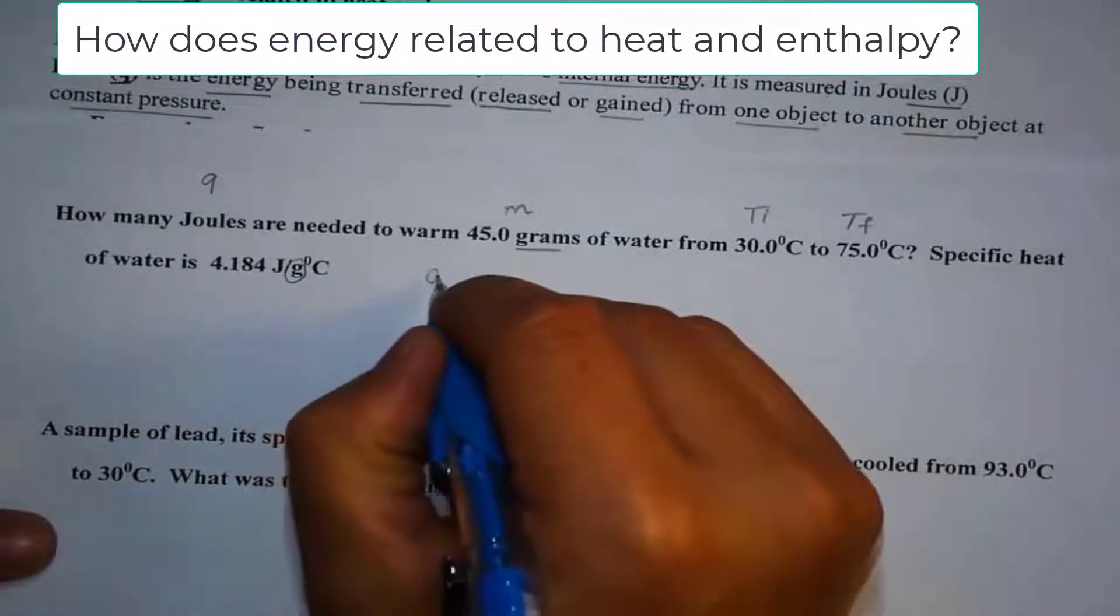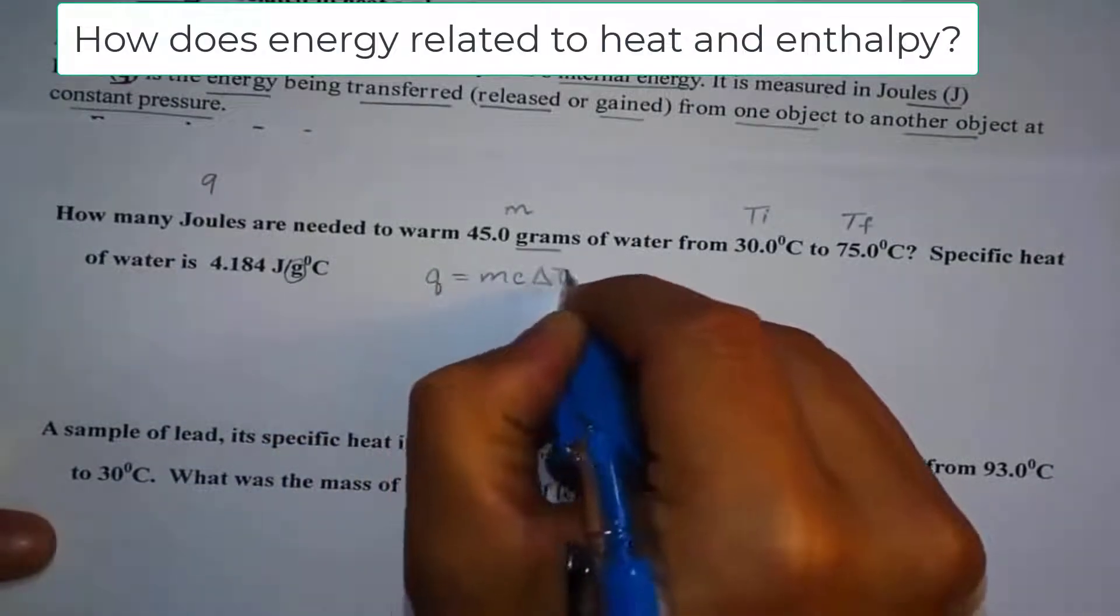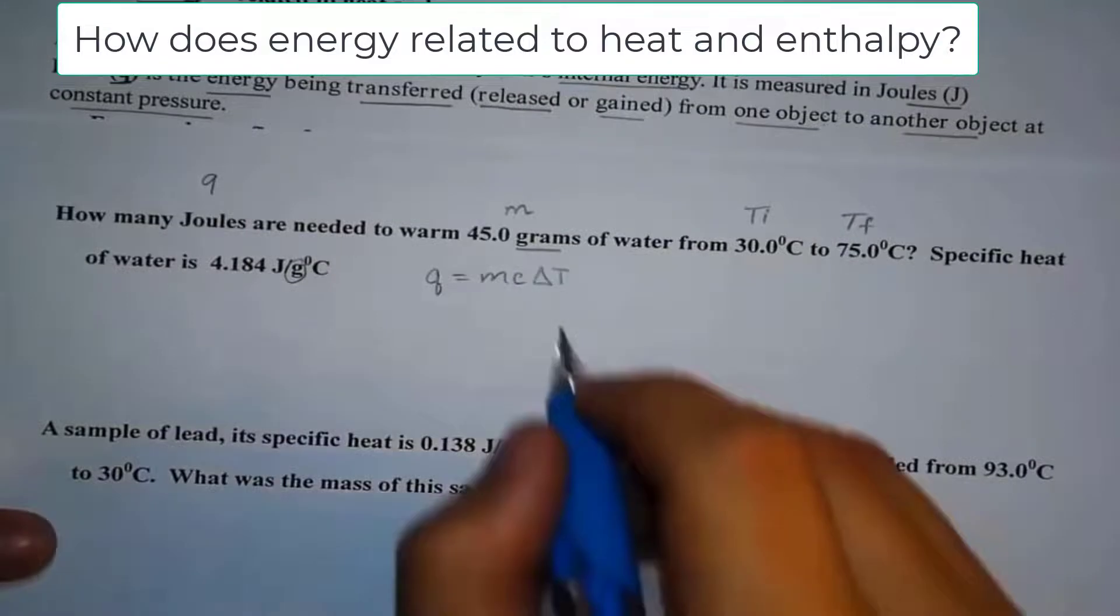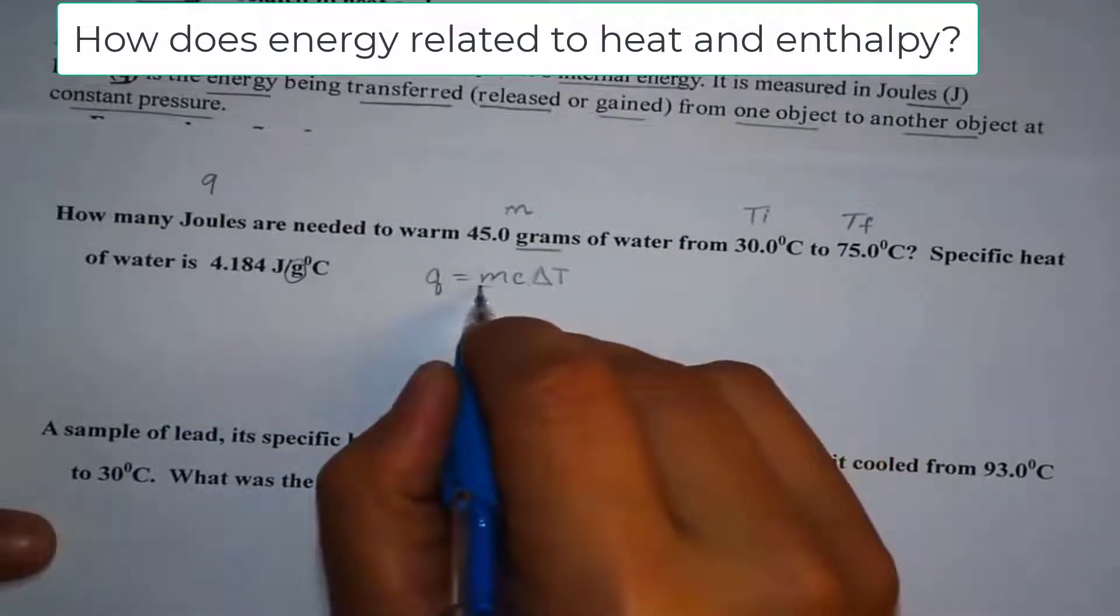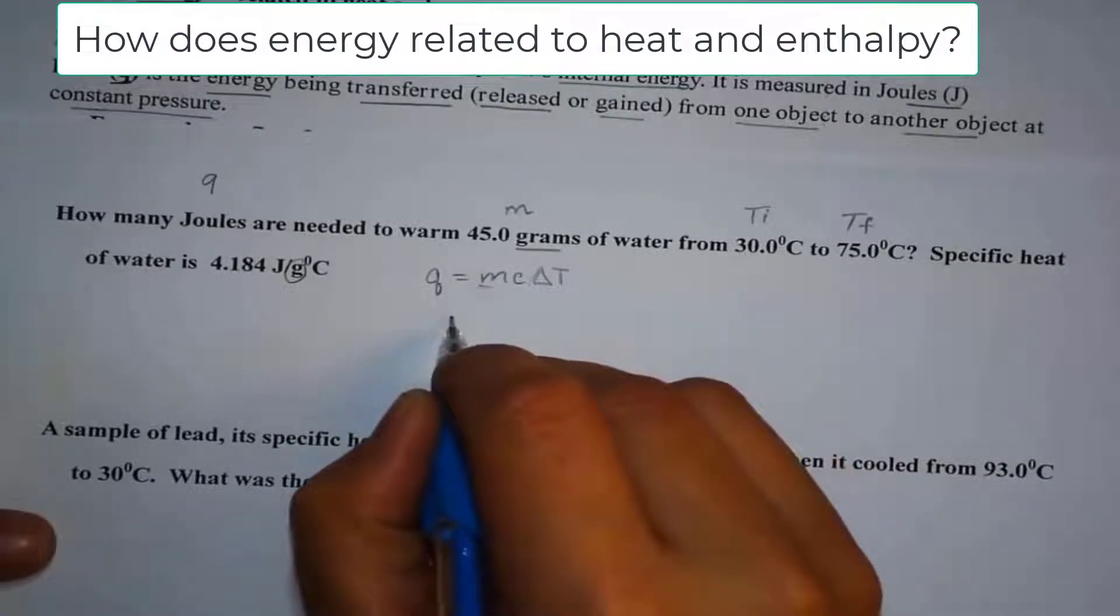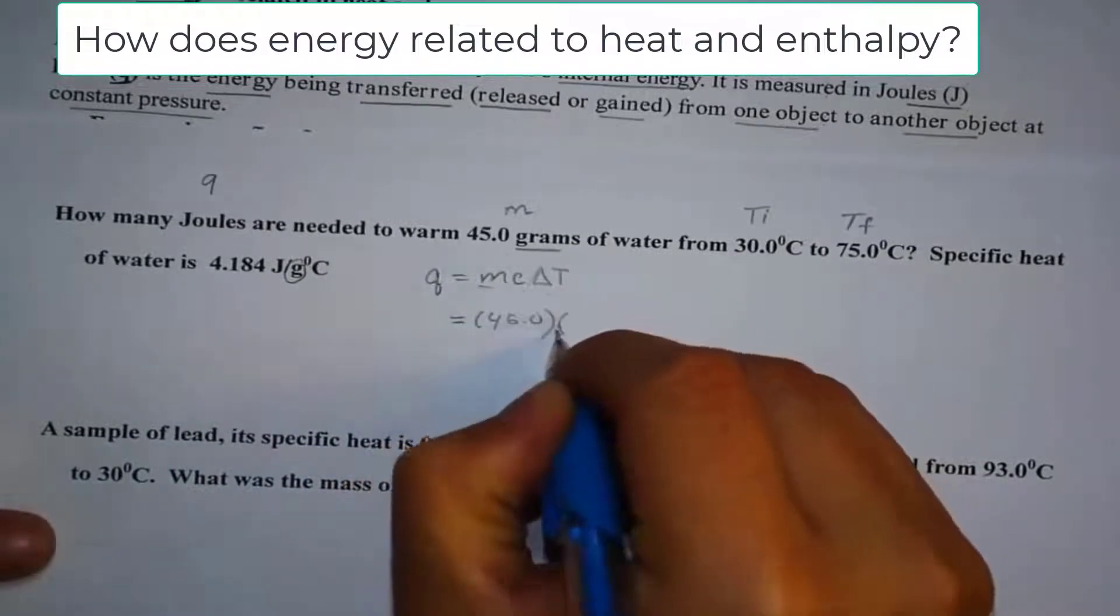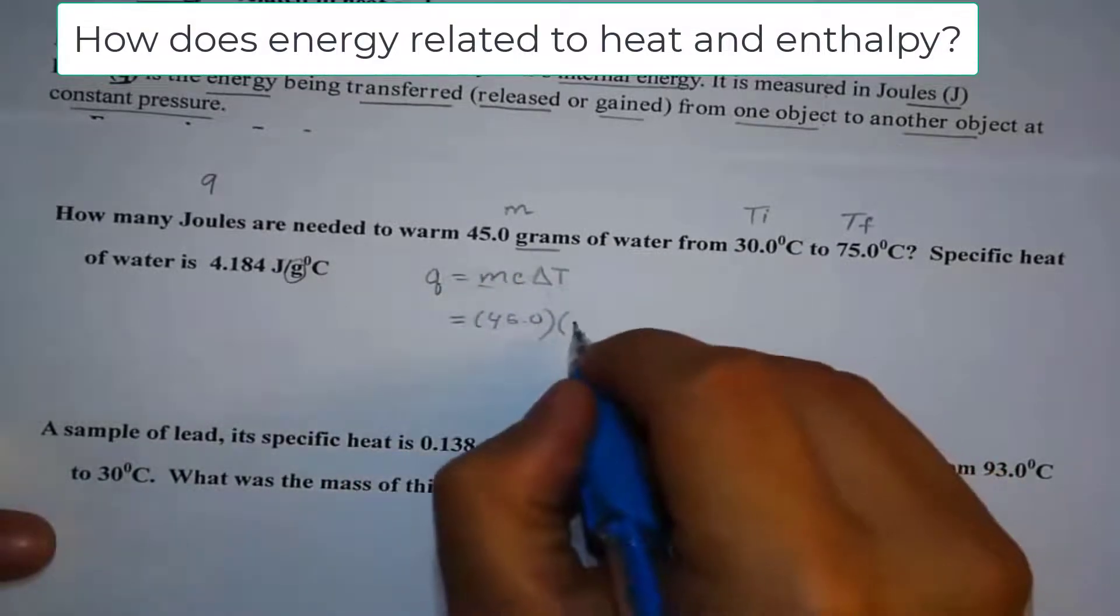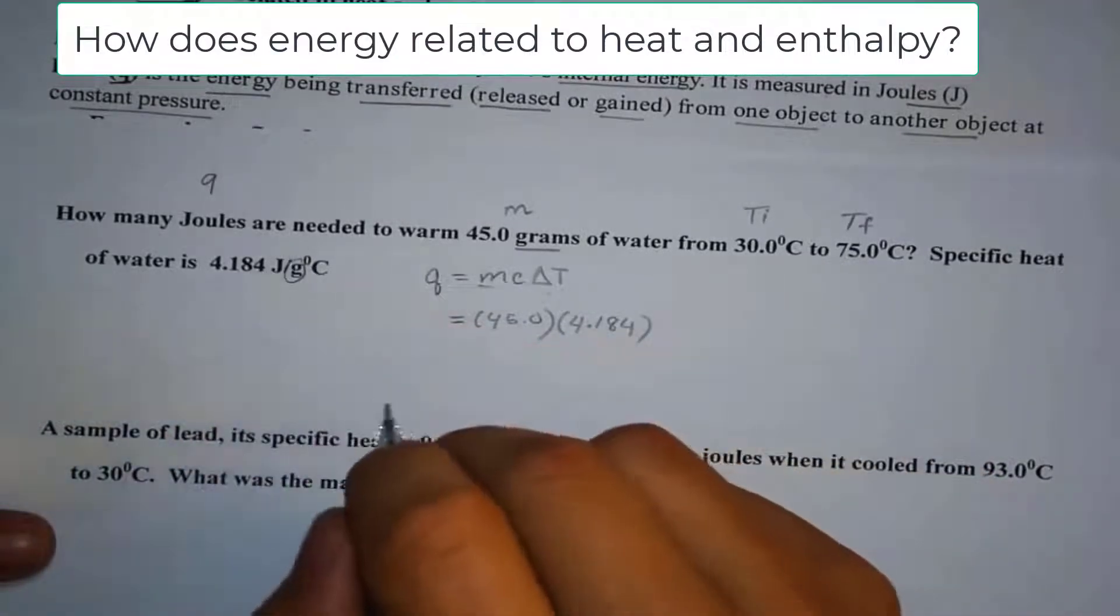Now let's use the equation. We know that Q equals MC delta T. And one way you can remember this is MCAT. Think of the delta. It looks like the letter A, isn't it? So we call this MCAT. Q equals MCAT. So in this case, your mass is 45.0. And notice how I don't put the unit there. And my specific heat capacity is 4.184. Again, I did not put the unit there. That way it doesn't confuse.